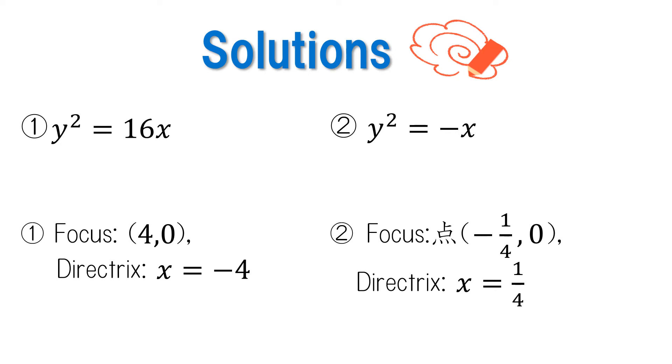The answer to number 2 is that the focal point is the point (negative 1 over 4, 0), and the directrix is the line x equals 1 over 4. Were you able to answer both questions correctly?